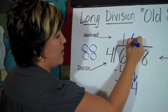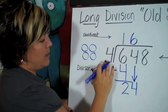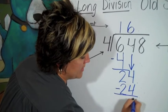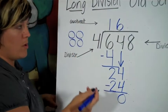And so I would say six. Six times four is 24. When I subtract, I have zero tens left.